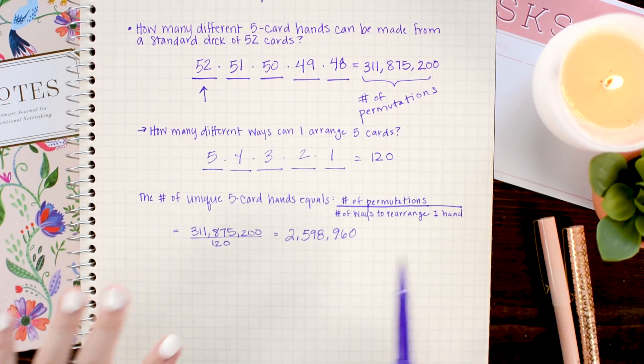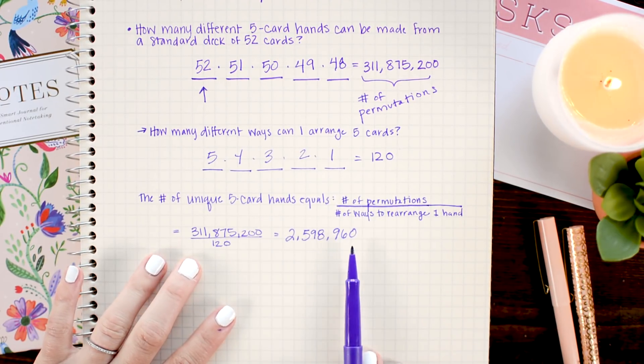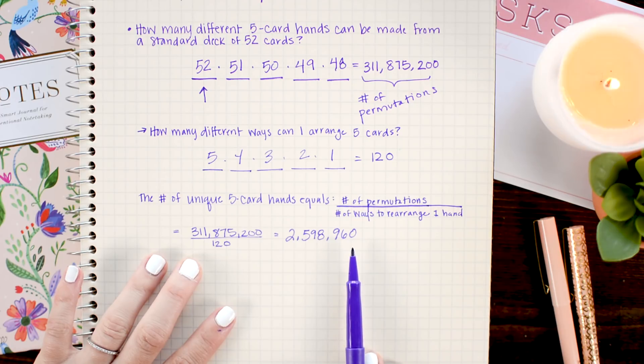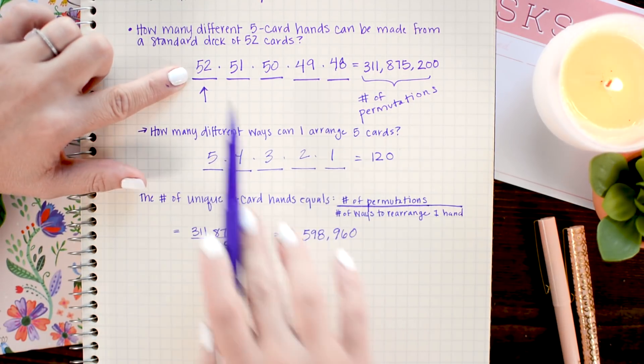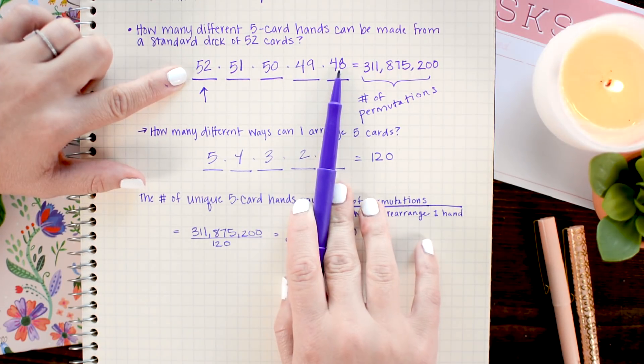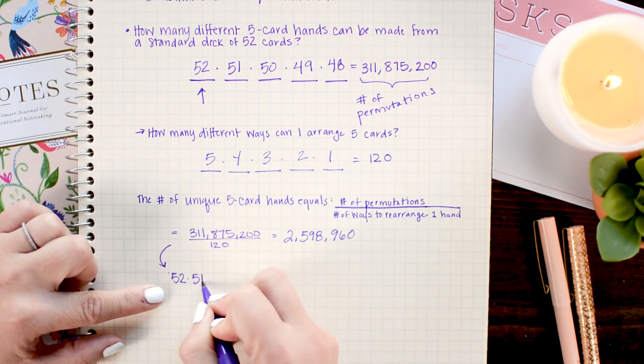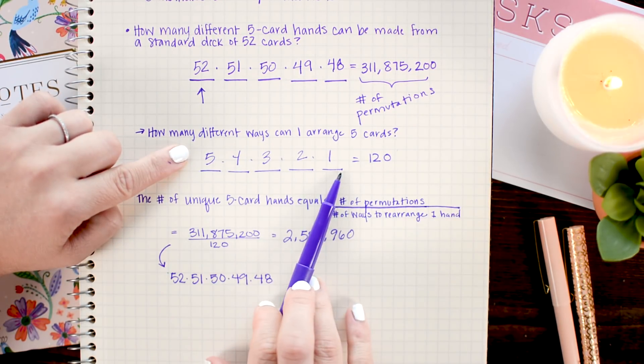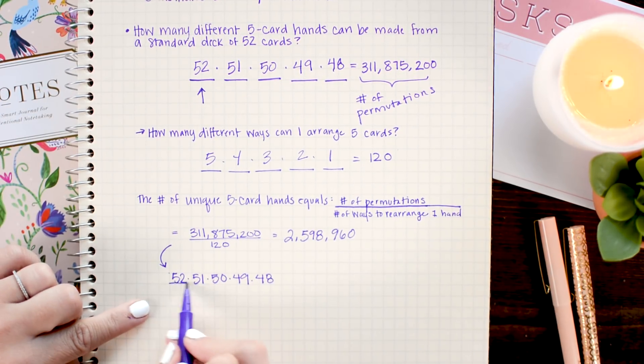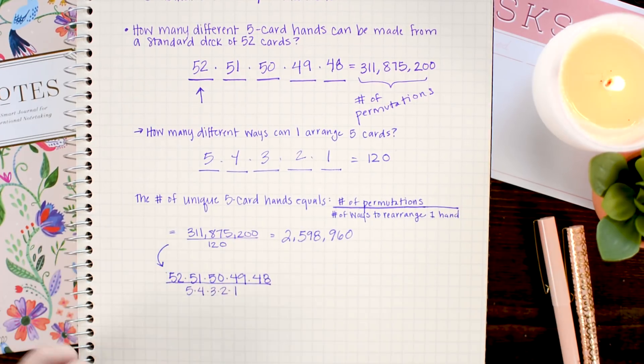Now, let's take a look at how this relates to the combinations formula. So, here I have this number from multiplying 52 down to 48. And I divided it by this 5 down to 1.